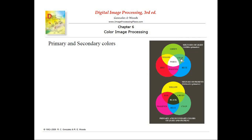In the case of light, we have three primary colors: green, red, and blue. When these three primary colors combine, they produce white. The region where red, green, and blue all three combine produces white color.